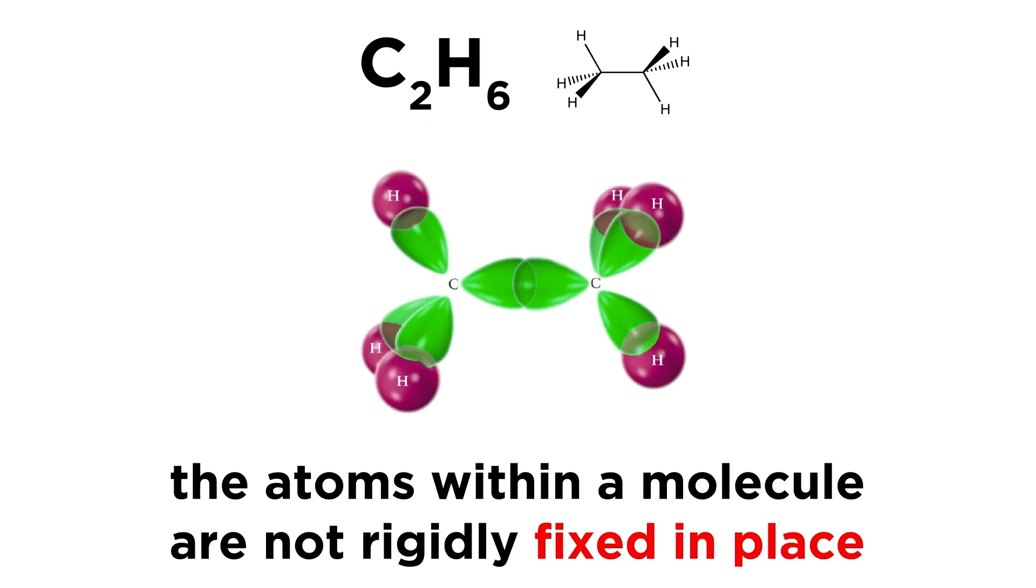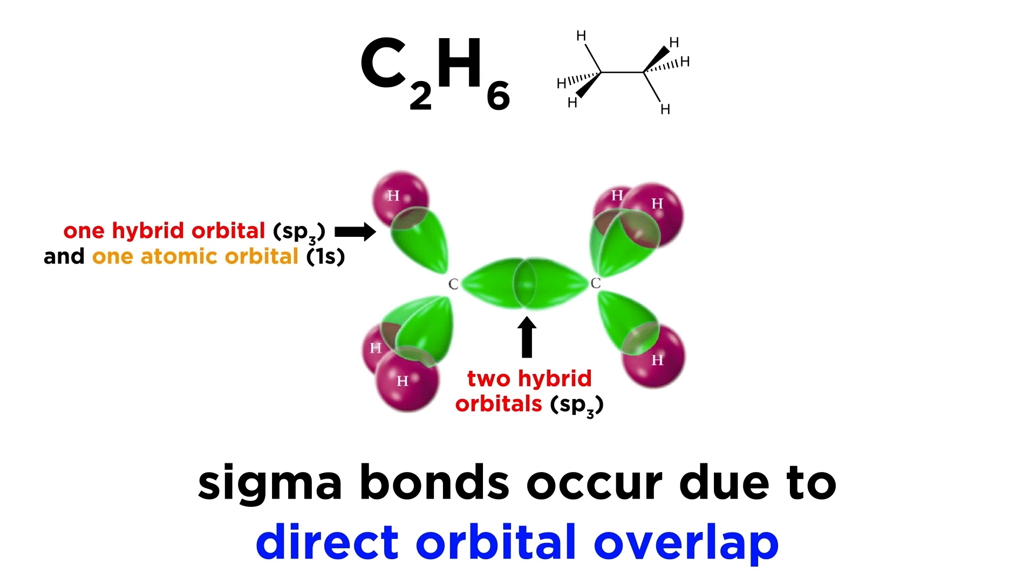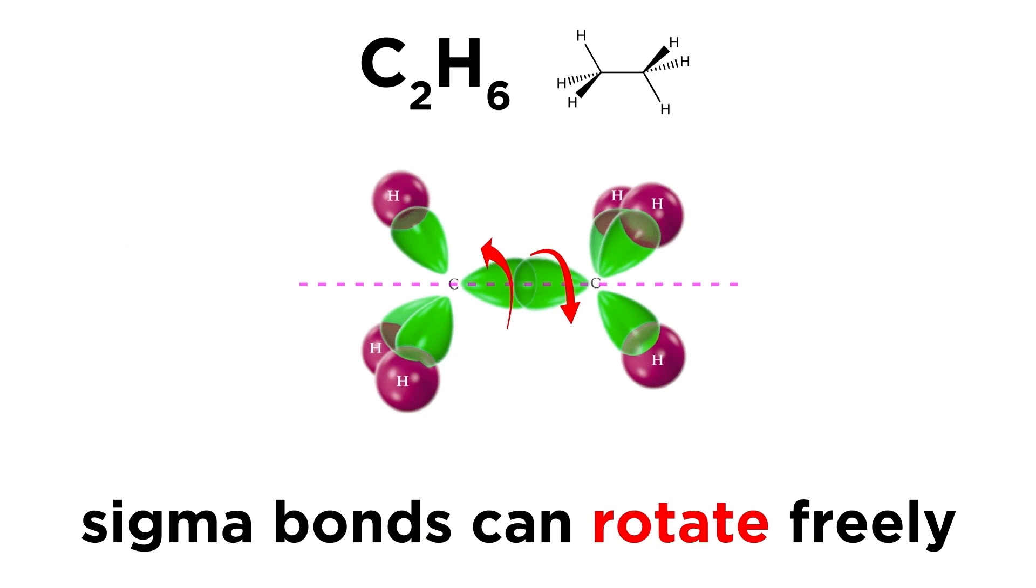Let's go over some details about the different conformations alkanes can take on. The first thing we want to understand about organic molecules is that the atoms are not rigidly fixed in place. Sigma covalent bonds occur due to direct orbital overlap, whether via atomic orbitals or hybrid orbitals, so as long as these orbitals are overlapping in this way, the bond is intact. What this means is that rotation can occur freely about this internuclear axis, because no matter how much this spins, the overlap will remain.